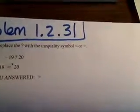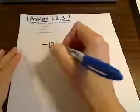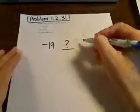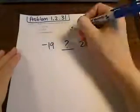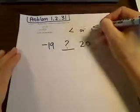And this one right here, problem 1.2.31, they ask us to replace the question mark with the inequality symbol, either less than or greater than. They give us negative 19 and 20. So we have negative 19 question mark and then 20, and they want us to use either this one or this one.